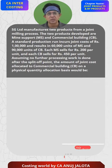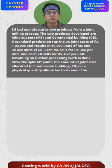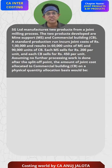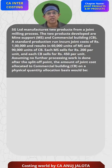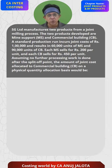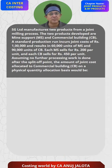A standard production unit run incurs joint cost of Rs 1,00,000. Each MS sells for Rs 200 and each CB sells for Rs 450, assuming no further processing work is done after the split-off point. The question asks for the amount of joint cost allocated to CB on a physical quantity allocation basis.